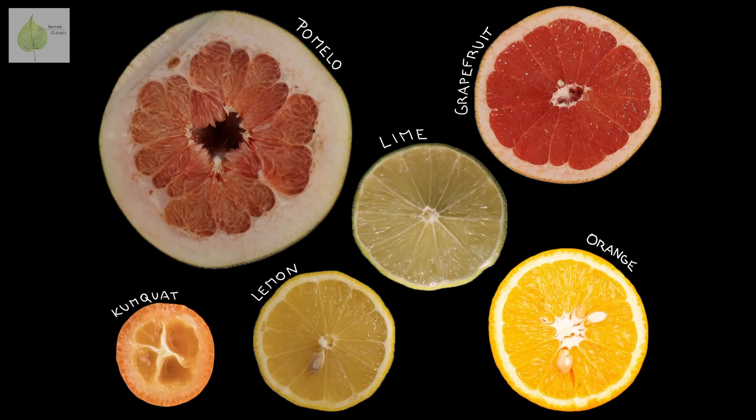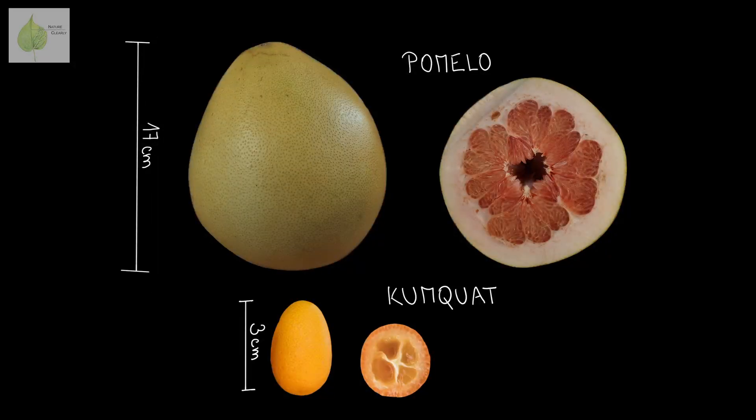The number of segments per fruit varies by species, although it's not set and there is some variation within the species as well, but each has a distinct range. It also tends to correlate with the size of the fruit. To illustrate this, kumquats, the smallest citrus, have only four segments, while in pomelos, the largest citrus, you can count up to 18 segments.